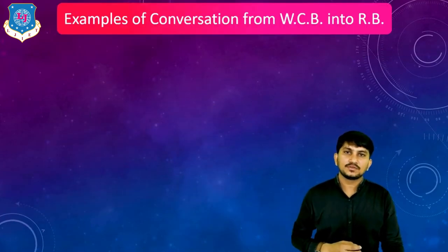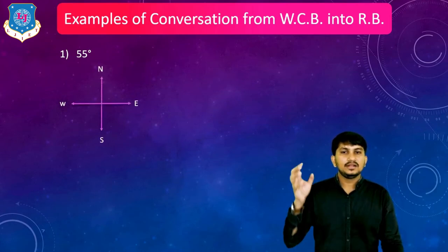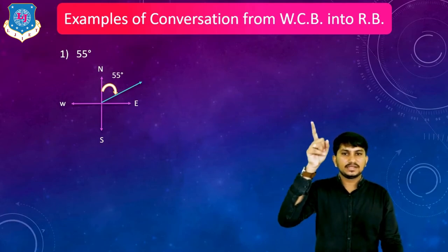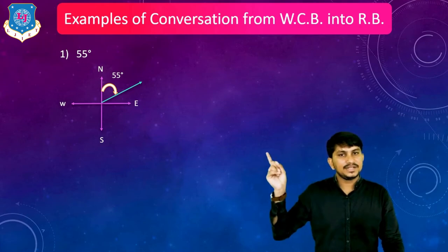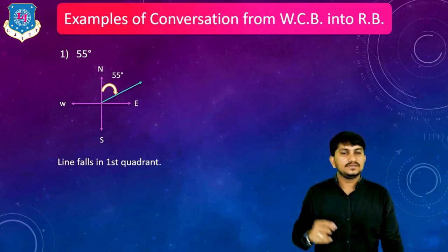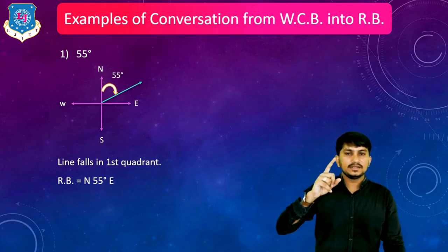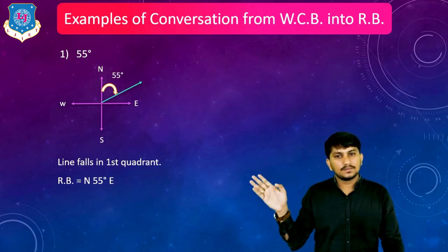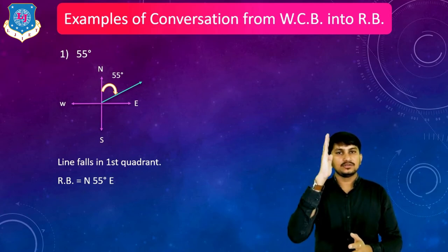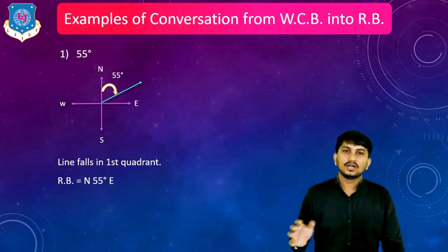We have some examples of conversion from WCB into RB. First example: suppose WCB equals 55 degree. North is 0 degree, east is 90 degree, south is 180 degree, west is 270 degree, and north again is 360 degree. 55 degree lies in the first quadrant, so RB equals WCB. Therefore RB is written as North 55 degree East. Always remember, north and south come first, then east and west, because the angle is taken from magnetic north or magnetic south whichever is nearest.